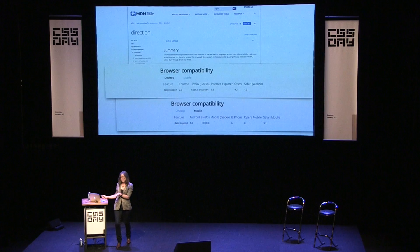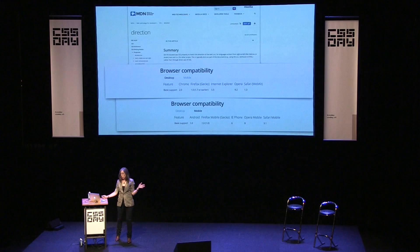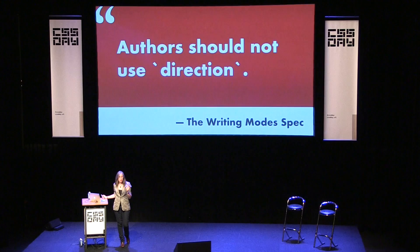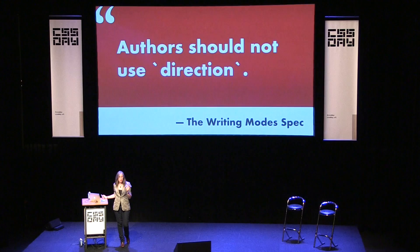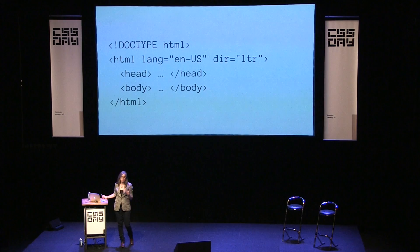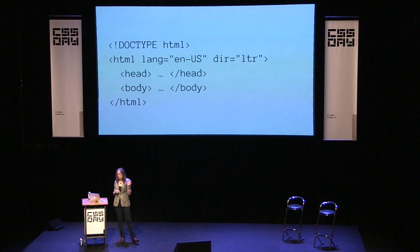But authors should not use the direction CSS property — the writing mode specification says so. Why? Because you really need to specify whether it's a right-to-left or left-to-right language in the HTML itself. It's not something that should fall off when the CSS falls off. It has to do with the content — it's semantic, it's part of what it means for this to be HTML. So you should be setting this on your HTML element, along with the language attribute. For example, 'lang=en-us, dir=ltr' or 'lang=ar, dir=rtl.'